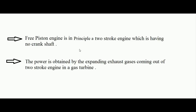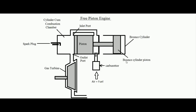Since there is no crankshaft, the utility of this engine is that the power is obtained by expanding the exhaust gases coming out of the two-stroke engine in a gas turbine. So to summarize: the free piston engine is basically a two-stroke engine with no crankshaft, and the power is obtained from the exhaust gases which are expanded in a turbine. Now let's understand the basic components of the free piston engine.